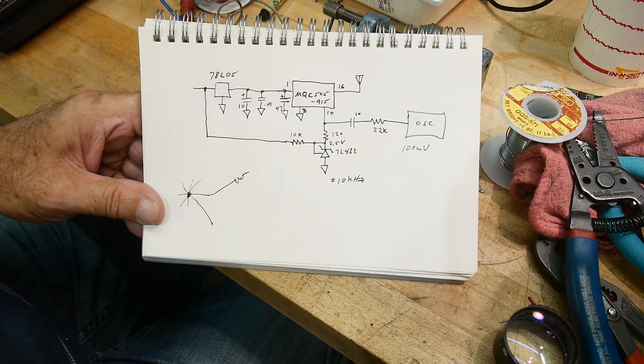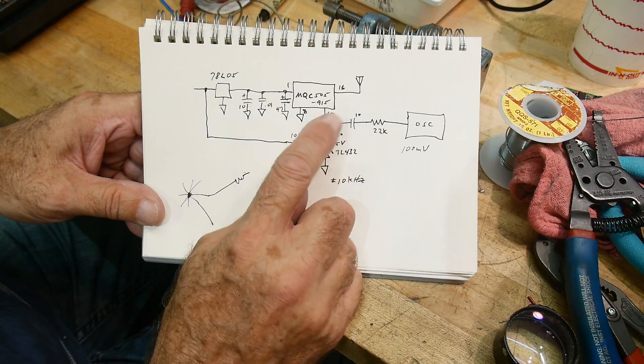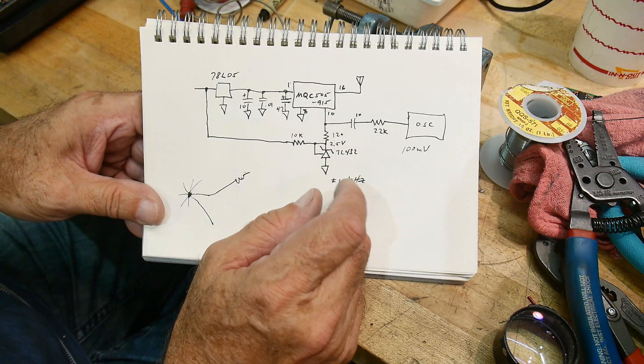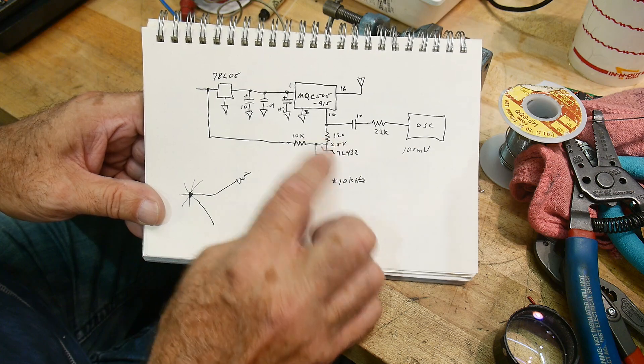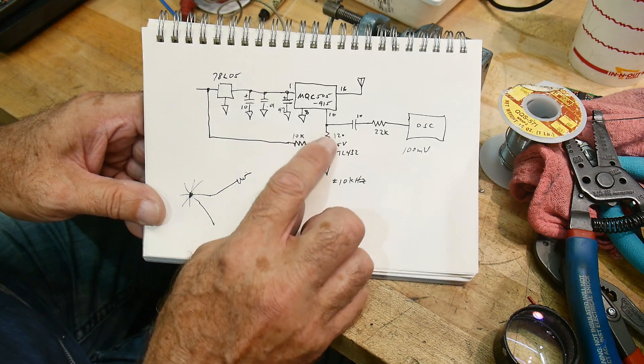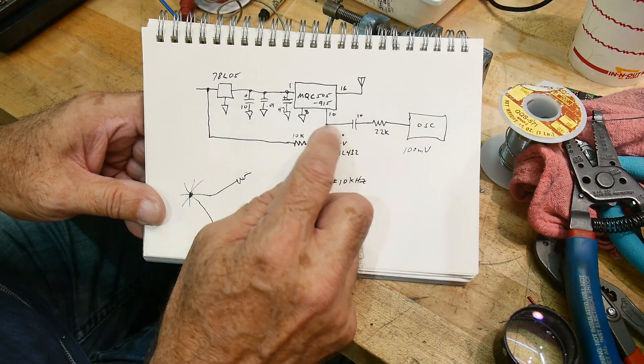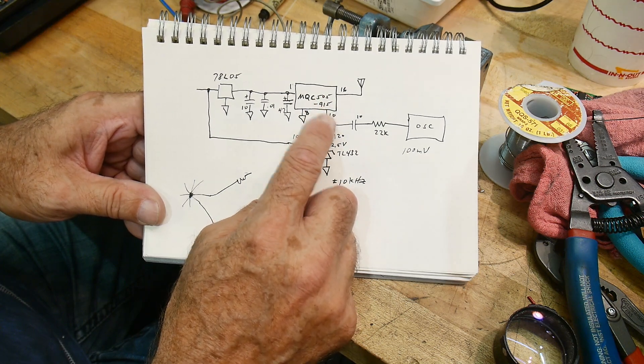So, let me show you the schematic that I had originally. So, this is when I was doing the modulation of it. And pin 10 is the frequency adjust. And what I had was I had pre-biased it with two and a half volts. And that brought it up into the 900 megahertz range.